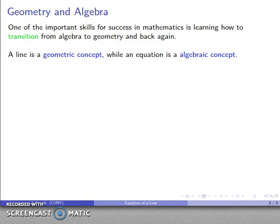So in this case, a line is a concept from geometry. An equation is a concept from algebra. And when we go back and forth between the equation of a line and the graph of a line, we're navigating this transition.